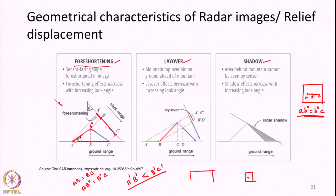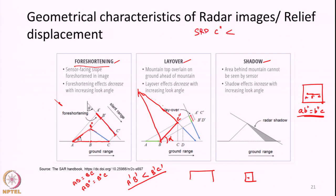The next concept is layover. Consider a hill with a relatively steeper foreslope, labeled A to C double-dash. If the slope angle is steep enough, the slant range distance to the top point C double-dash will be shorter than the slant range distance to the ground point B. So the radar system will image point C as if it is nearer to the system than point B.